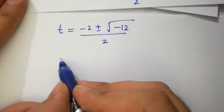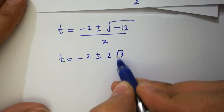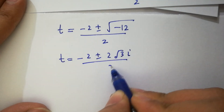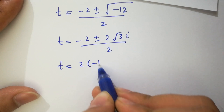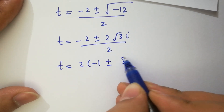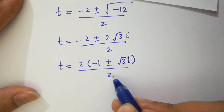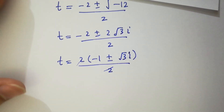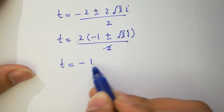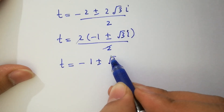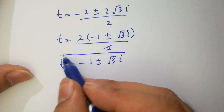So t equals (minus 2 plus or minus 2 square root of 3 i) over 2. Factoring out 2, we have minus 1 plus or minus square root of 3 i, over 2, and the 2s cancel. So t equals minus 1 plus or minus square root of 3 i. This is also our complex solution.